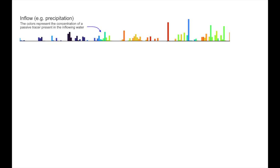I'll walk you through a static image, and then show you some animations illustrating the effect of different storage selection functions. Consider a time series of inflows. This might be precipitation on a watershed. The horizontal axis here is time, and the heights of the bars show the rate water is entering at each time step. The colors represent the concentration of a conservative tracer moving with the water.